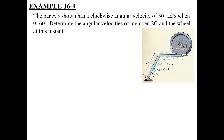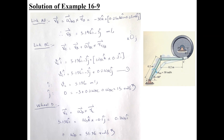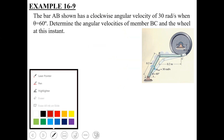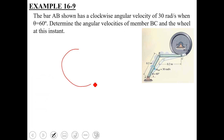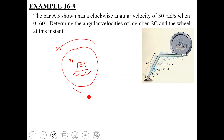Moving on to the third link, which is wheel D. You have grounded wheel D from its center point. So what type of motion is possible in wheel D? Rotational motion about its center point. So you have two links — AB and wheel D — that are in pure rotational motion.